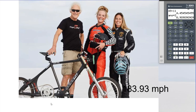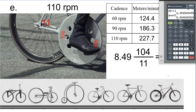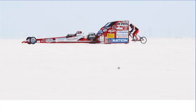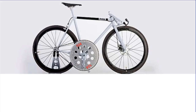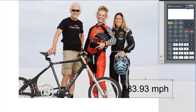So their cadence must have been really high. Comparing: the 104-to-11 bike theoretically reached 80 miles an hour. If I multiply my gear ratio by our max cadence baseline of 8.49 mph, that gives a top speed of only 75 miles an hour. So what was their actual gear ratio? If I know how fast they were going — 83.93 mph — I could divide that by 8.49 and that would tell me their gear ratio.